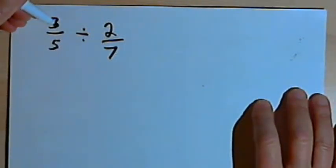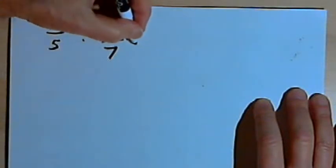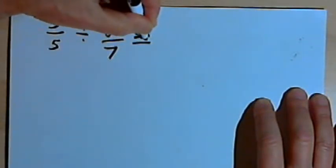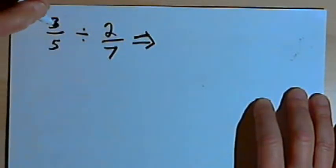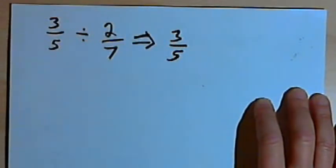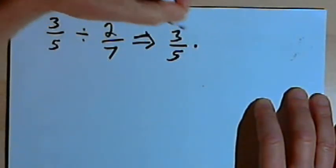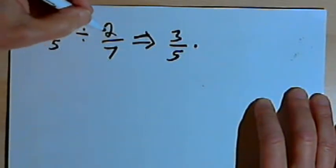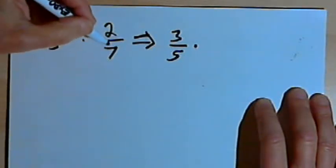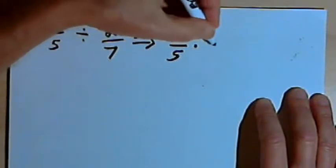Here I've got 3 over 5 divided by 2 over 7. And we've got a rule that says I can convert this into a multiplication problem. I can keep the 3 over 5, the first fraction, exactly as it's written. I take the division sign and turn it into a multiplication sign, and I take the reciprocal of my second fraction — in other words, I flip that fraction over. So the 2 over 7 is going to become 7 over 2.